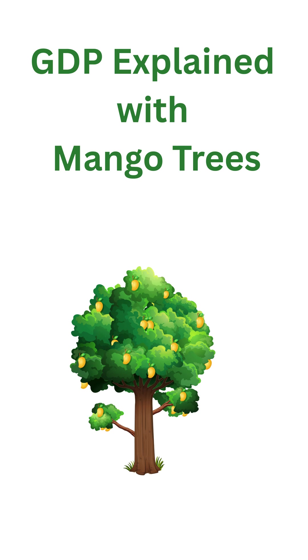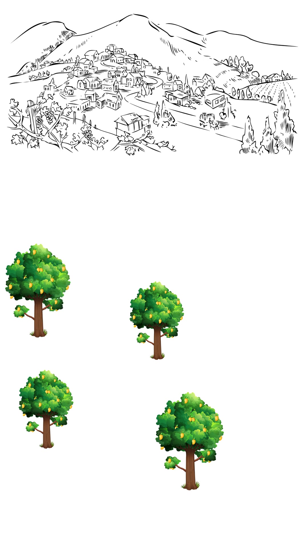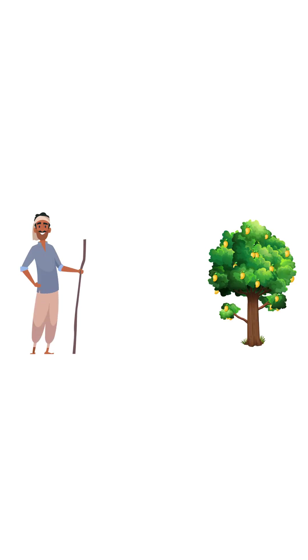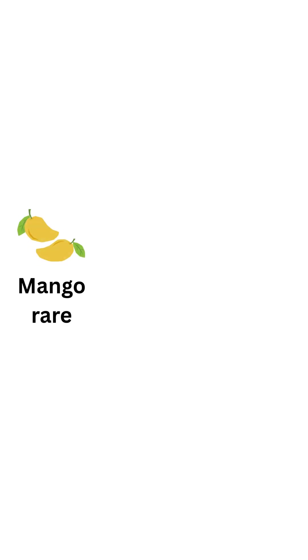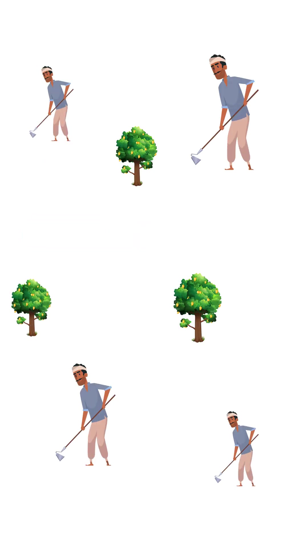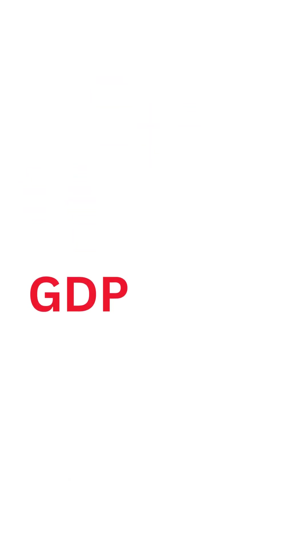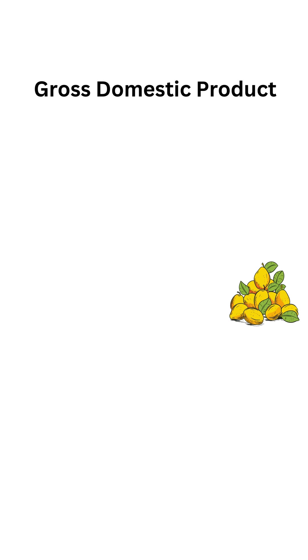GDP explained with mango trees. In a land full of sunshine and smiles there are villagers and mango trees. If villagers have only one mango tree, mangoes are rare, so mangoes are valuable. But if villagers plant many mango trees, mangoes are everywhere and suddenly mangoes are not so special anymore. That's GDP in action. GDP stands for Gross Domestic Product — it means how much stuff, like mangoes, a village makes.